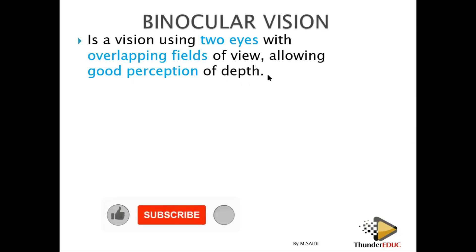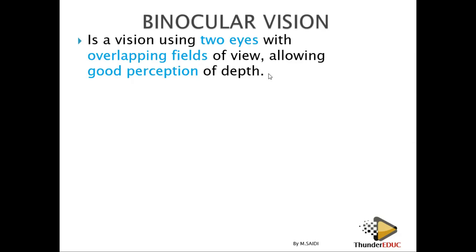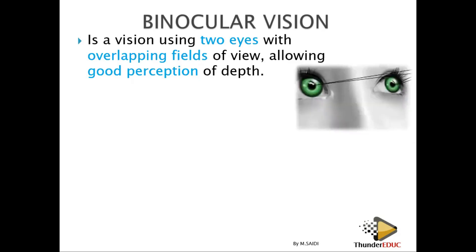Binocular vision means you can judge exactly the distance and size of an organism using both eyes. Multiple images are formed, but the brain interprets them as one organism or one individual being viewed.